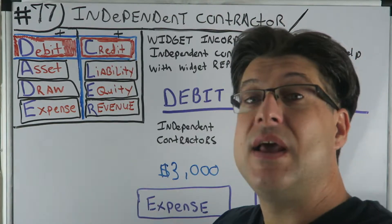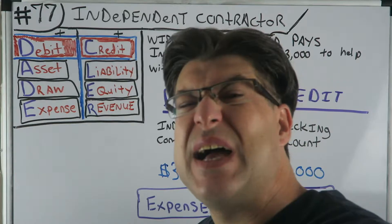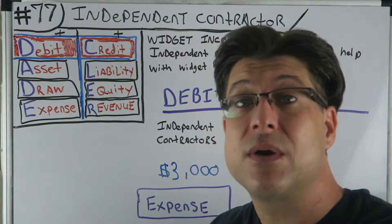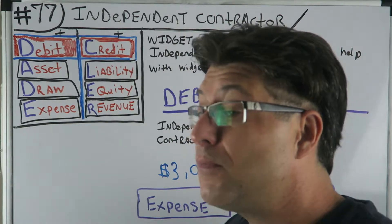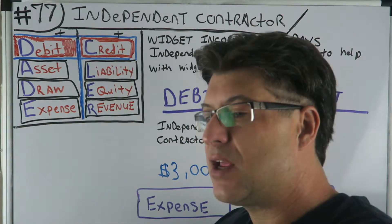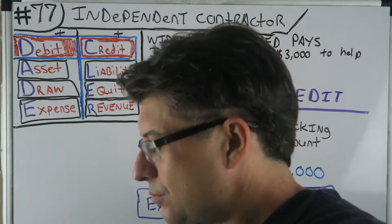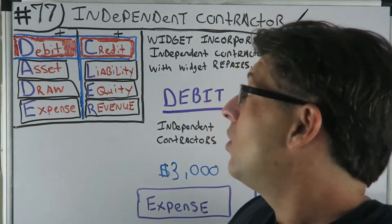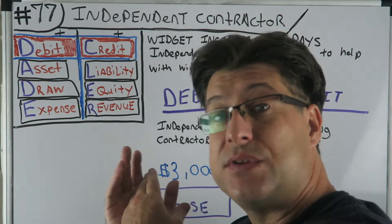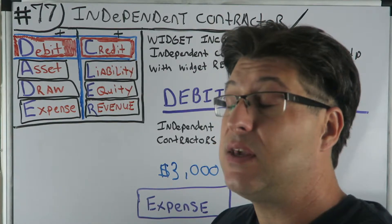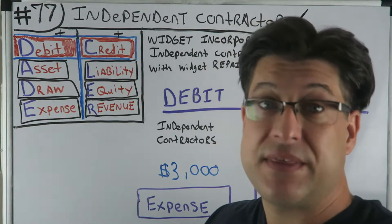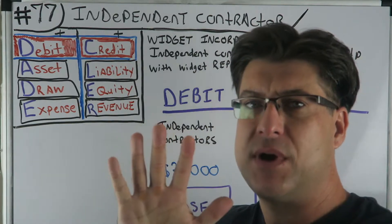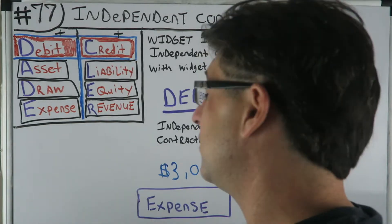Even bigger than this being number 77 of my classic series, it is number five of Widget Incorporated, where we started our own little business. Hopefully now that we're getting going, you can see exactly why — after this journal entry — the balance sheet and income statement are the way they are. We've just been doing one journal entry a month.